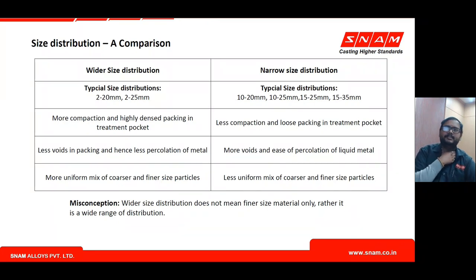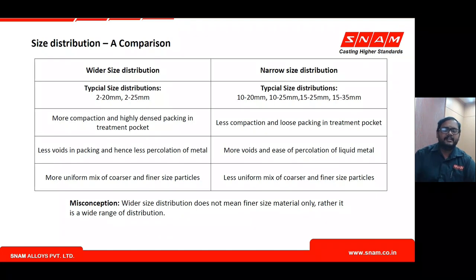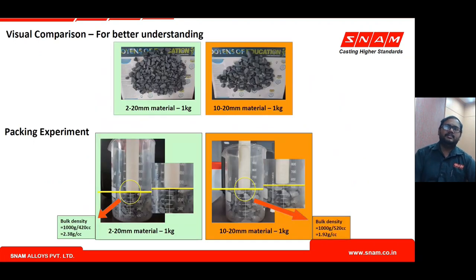There is a misconception that wider size distribution means only finer material. A wider size distribution covers a wide range — for example, 4 mm to 35 mm — with sizes such as 4, 6, 8, 10, 12, 15, 20, 25, 30, 35 mm in adequate proportions. This varying distribution increases packing density, decreases percolation, decreases reaction violence, and delays the reaction.